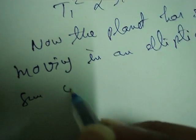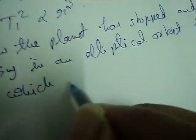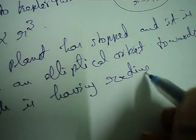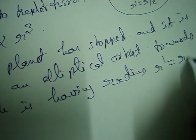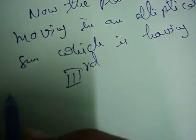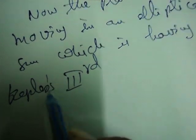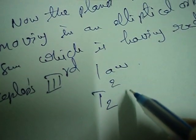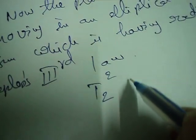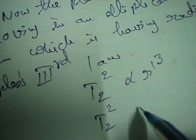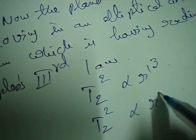The planet is now moving in an elliptical orbit towards the sun, which has a radius R' equal to R by 2. According to Kepler's Third Law, T2 squared is directly proportional to R' cubed.